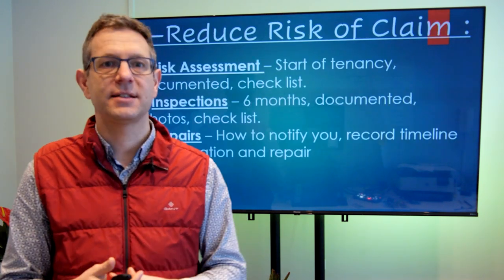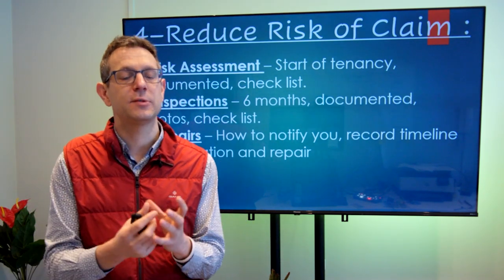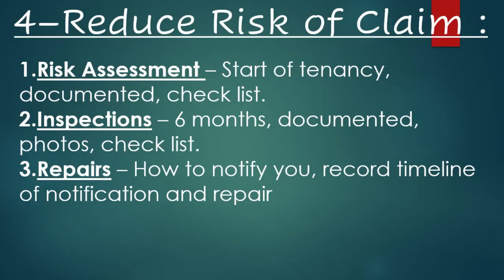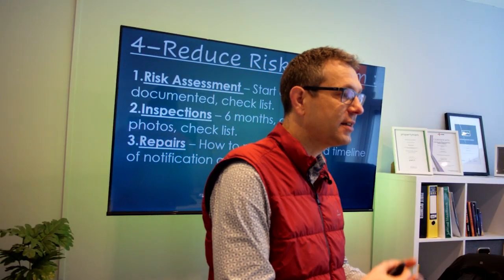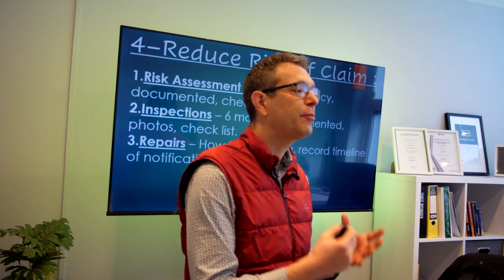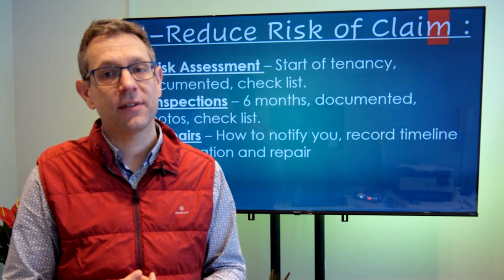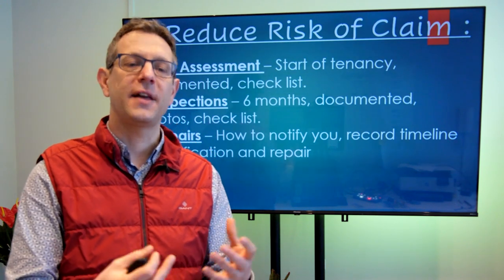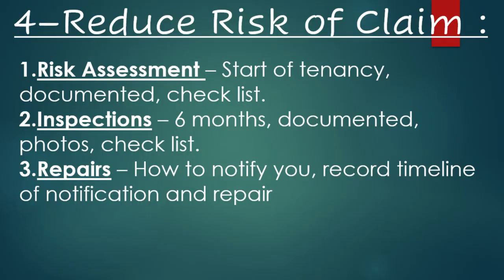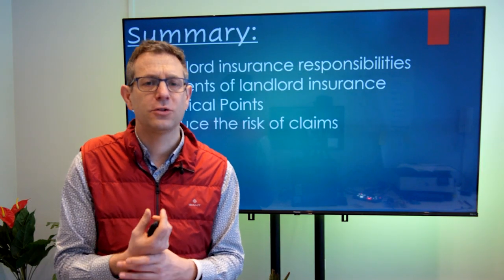To reduce the risk of a claim — these are basic property management activities. Conduct a risk assessment at the start of the tenancy: go around your property with a checklist, check everything that needs to be safe and compliant as part of your check-in process. If you spot anything, get it fixed. Inspect every six months, document that with photos and notes, and use a checklist. Make sure you are notified of repairs, record them all, and get them fixed in a timely manner.